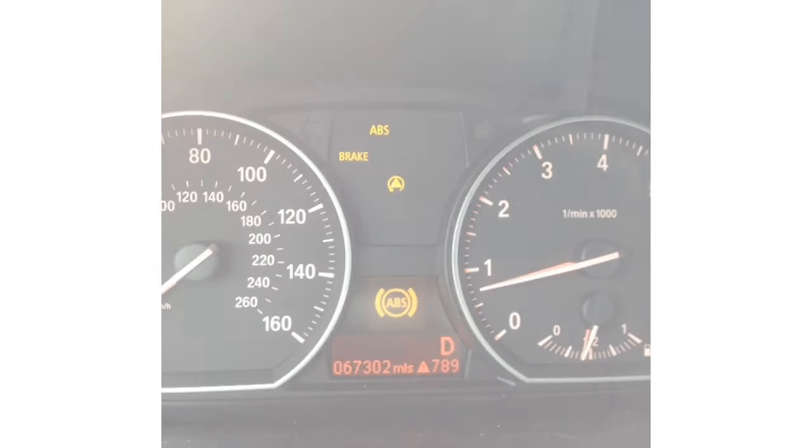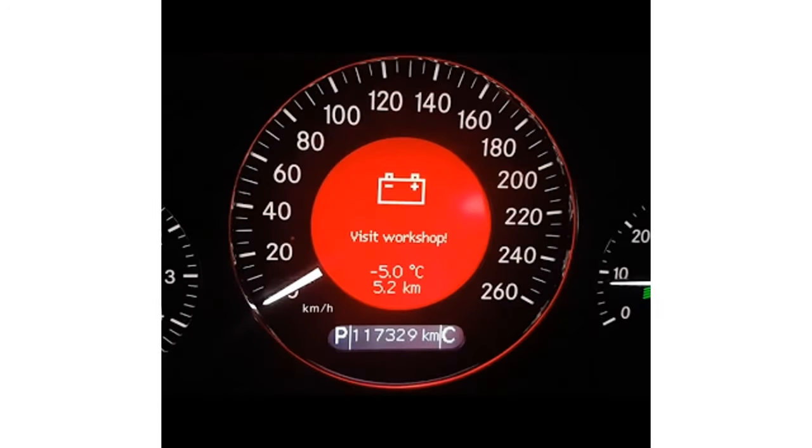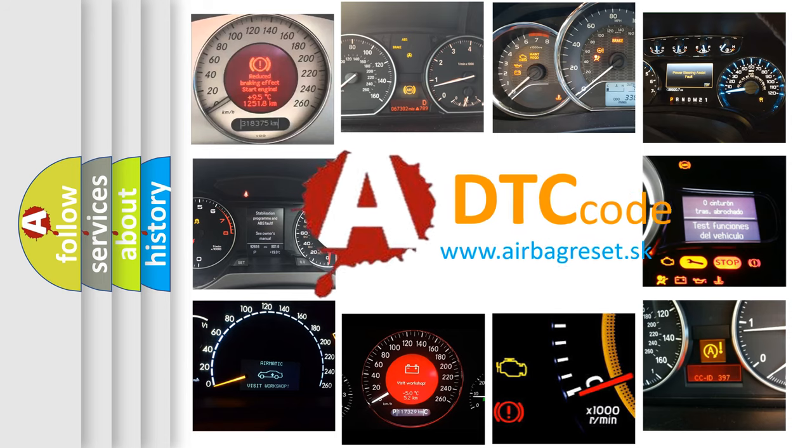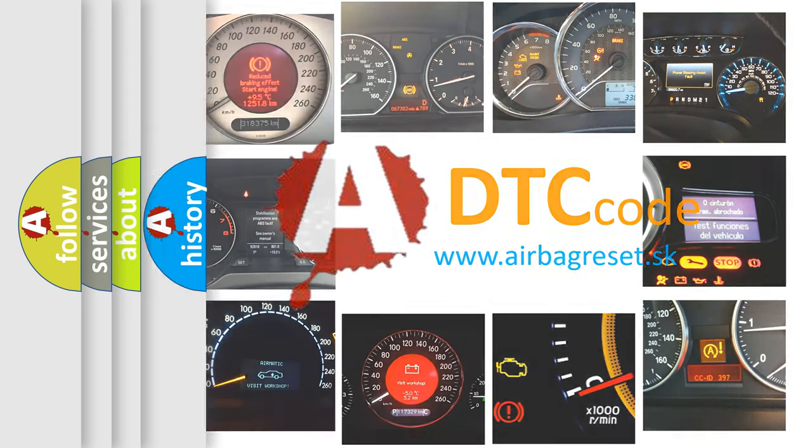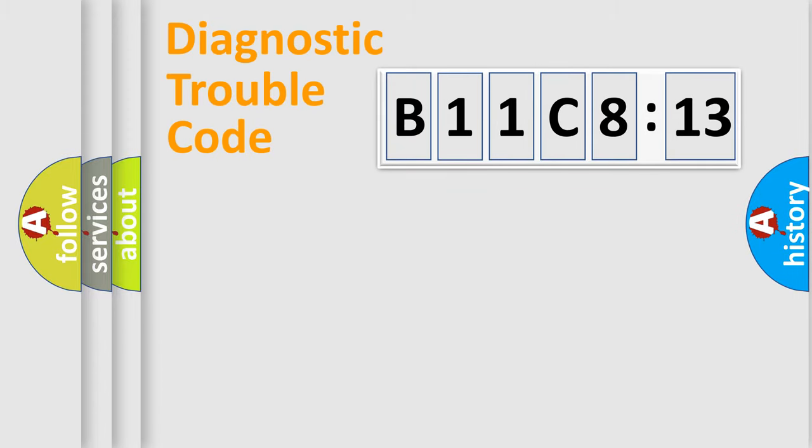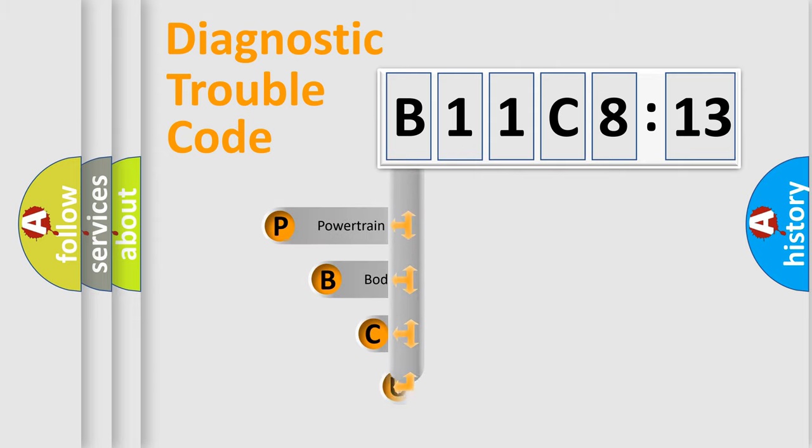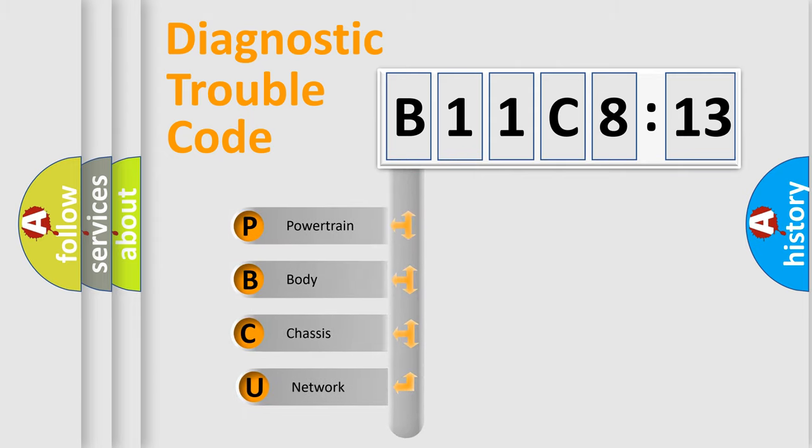First, let's look at the history of diagnostic fault code composition according to the OBD2 protocol, which is unified for all automakers since 2000. We divide the electric system of automobiles into four basic units: Powertrain, Body, Chassis, and Network. This distribution is defined in the first character code.